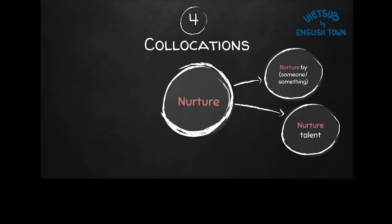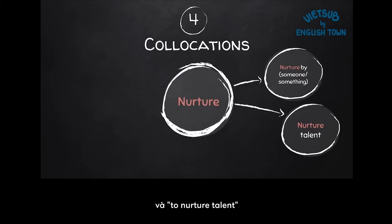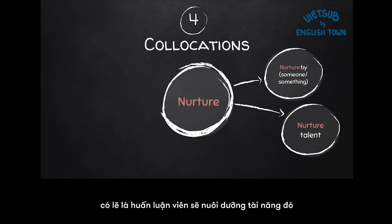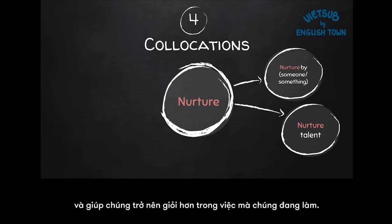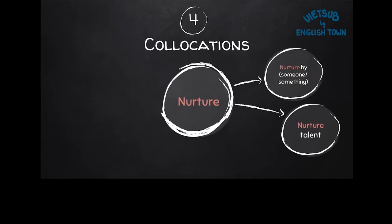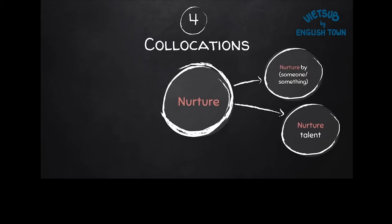Collocations for nurture: we have nurture by someone or nurture by something, and to nurture talent. If a child is talented, perhaps a coach will nurture their talent and help them become better at what they're doing. For example, the child was nurtured by their coach for many years.